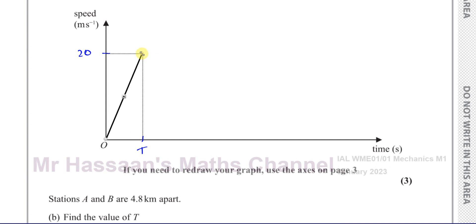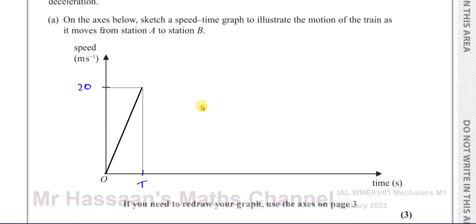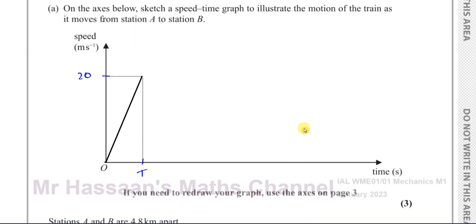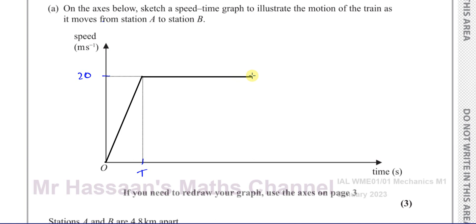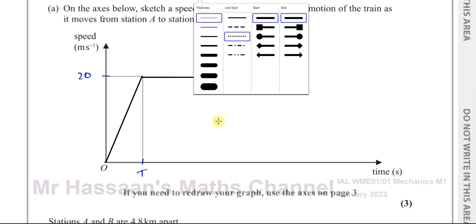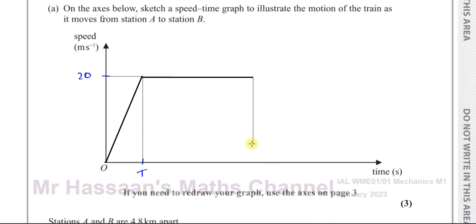Then it continues at a speed of 20 meters per second for three minutes. Since the graph is in seconds, three minutes is three times 60, which is 180 seconds. So by the time the constant speed phase ends, the time on the axis is T plus 180.